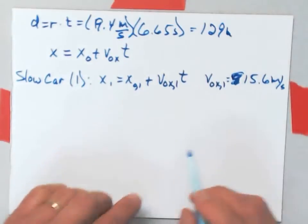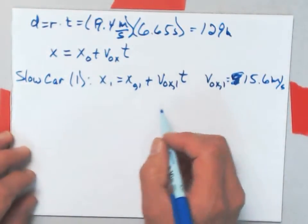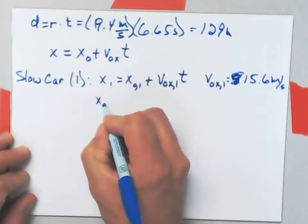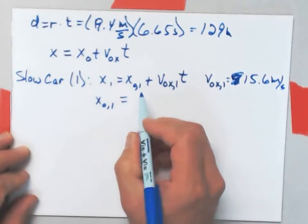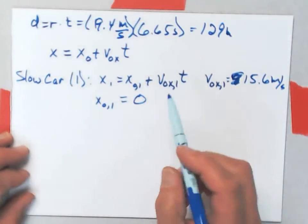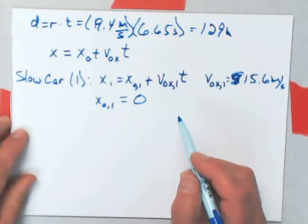Cross that thing out. What else do I know? I know that x naught for car 1 is equal to 0. It's passing through the intersection at time 0.